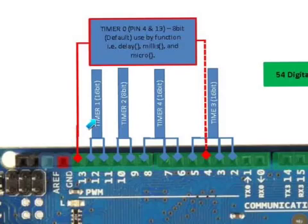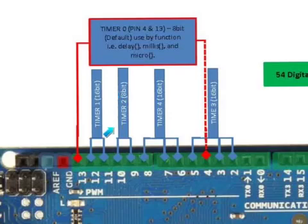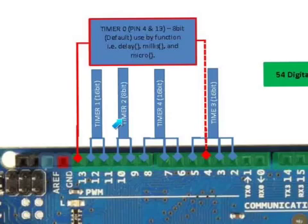Timer 1 has 16-bit resolution and uses pin 11 and pin 12 when configured in the Arduino software. The tone library uses timer 1 when the tone function is active. Timer 2 has 8-bit resolution and utilizes pin 9 and pin 10. Timer 2 is used by the servo library when the servo function is active.